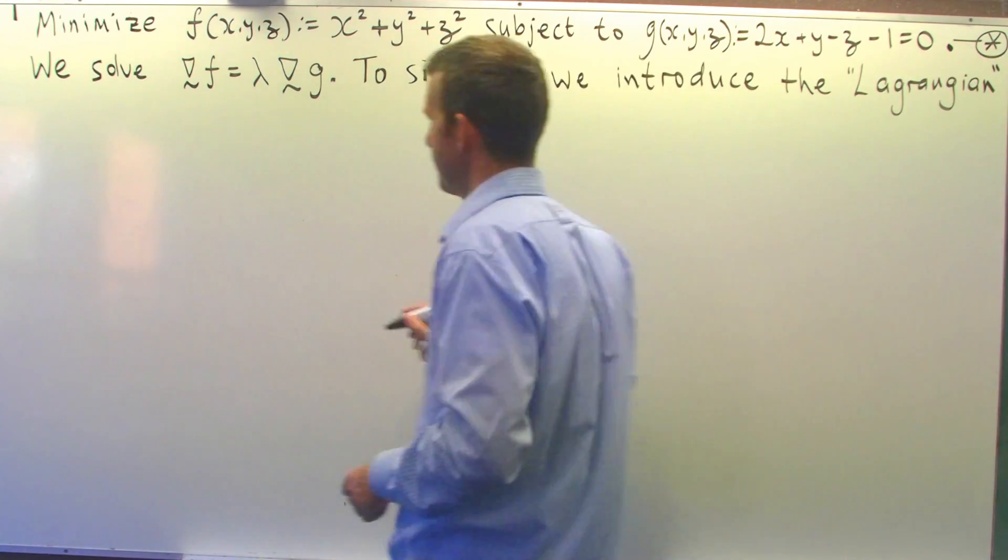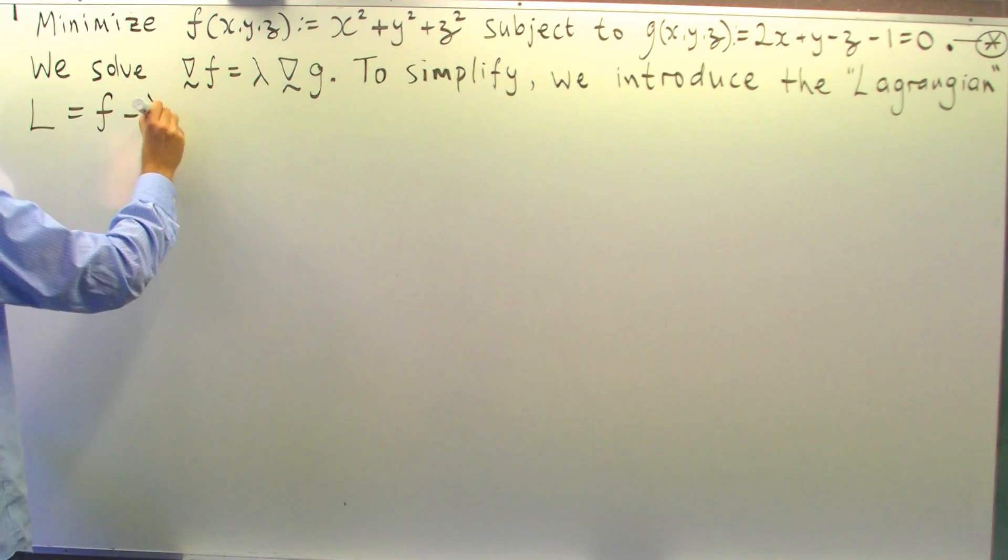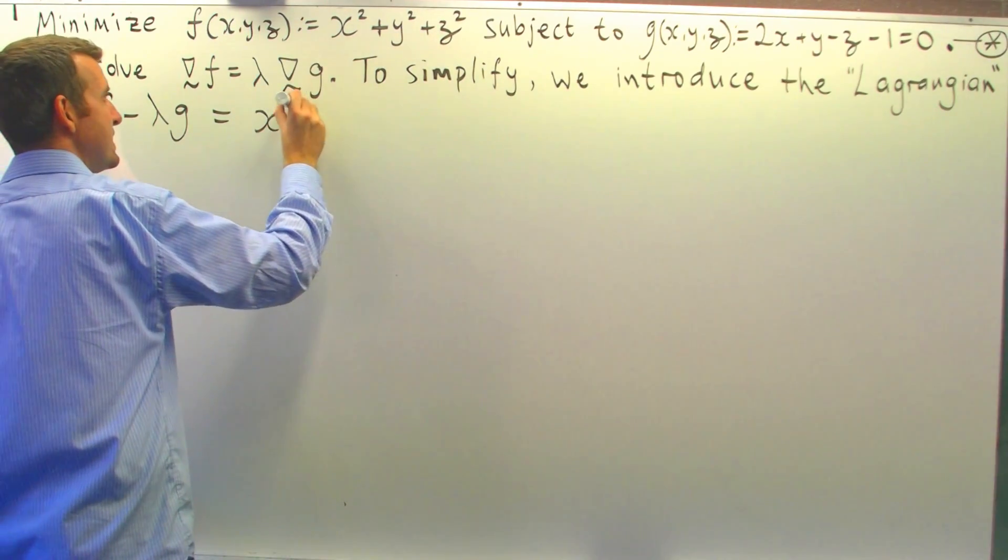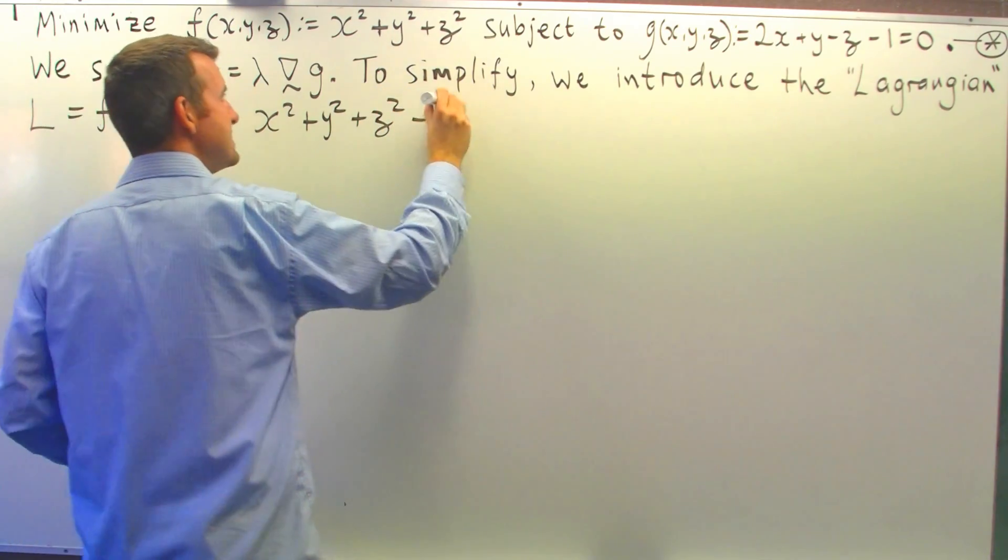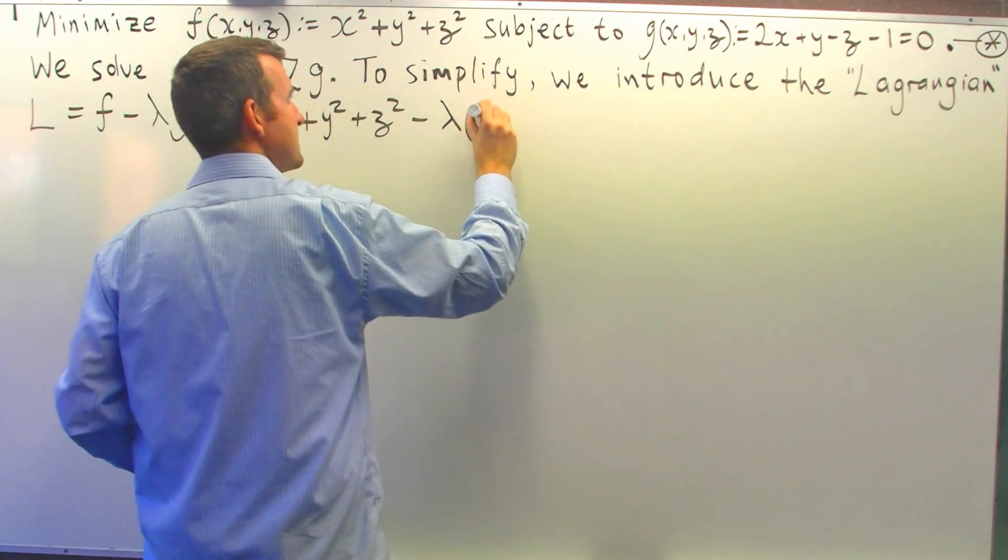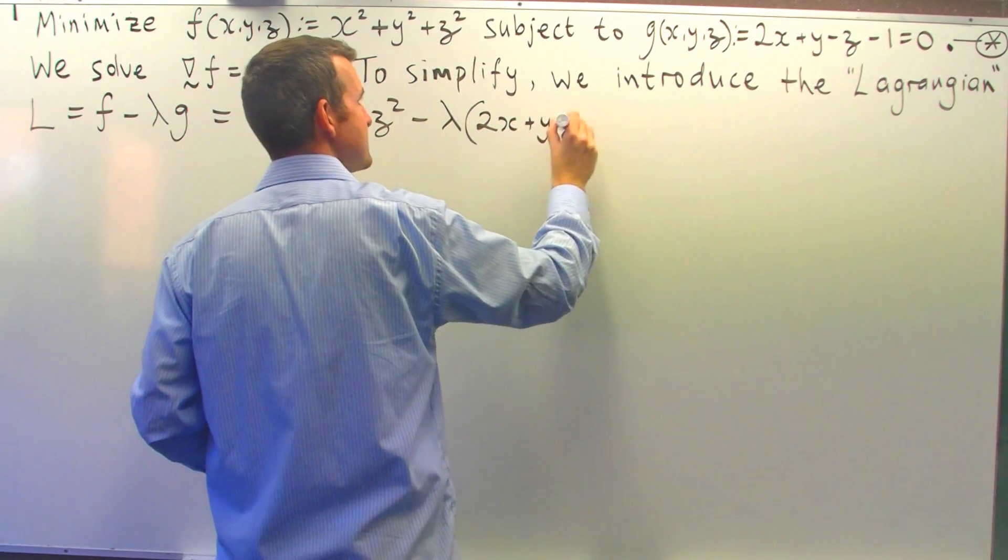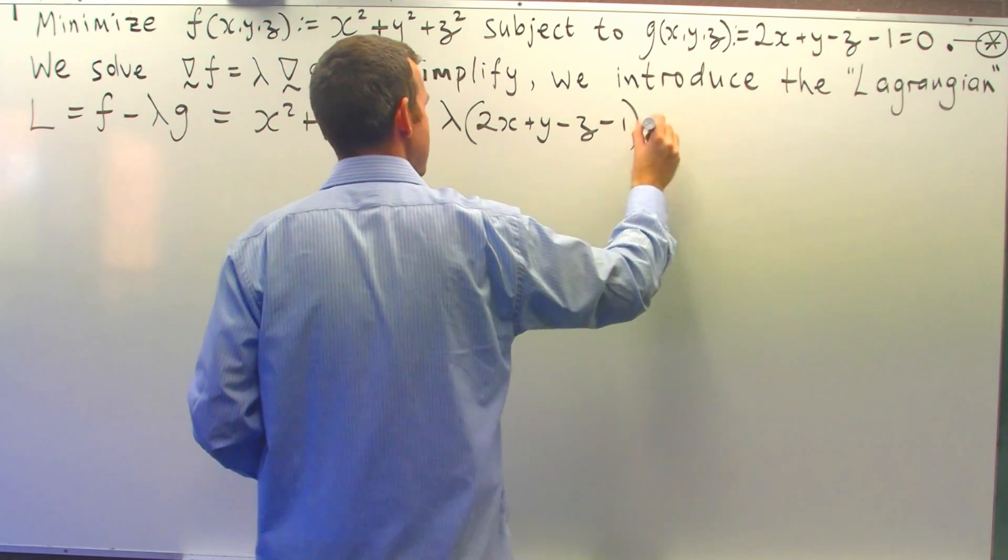Now this Lagrangian function is defined to be f minus lambda g. So for our problem, it's x squared plus y squared plus z squared minus lambda times g, which is 2x plus y minus z minus 1.